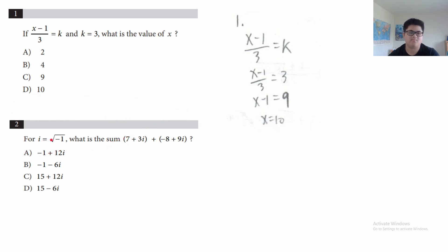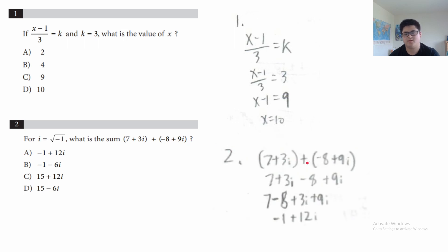For question 2, with i being the square root of negative 1, what is the sum? Imaginary numbers are a concept where you take square roots of negative numbers. However, for the context of this problem, you can just treat i as any variable and add them as if they were a variable. So 7 + 3i + (−8 + 9i): you combine like terms — 7 and −8, and 3i and 9i — and you get negative 1 plus 12i.